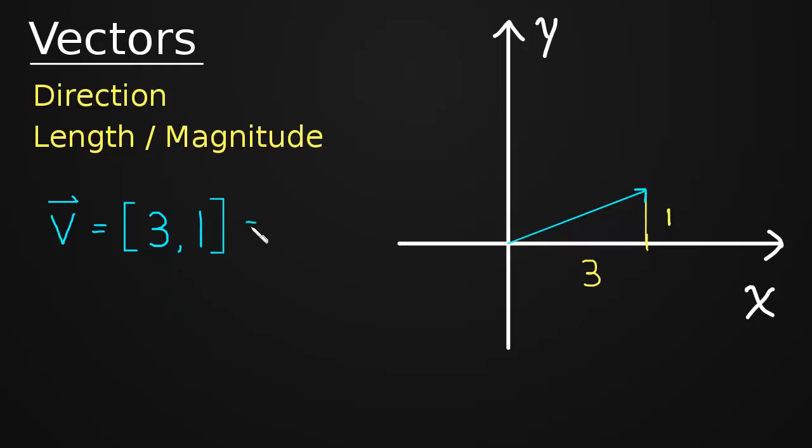Just a bit of notation here, this is also written as a column. And it's the exact same information, it's just vertical now. And again, this is still the X component and still the Y component.